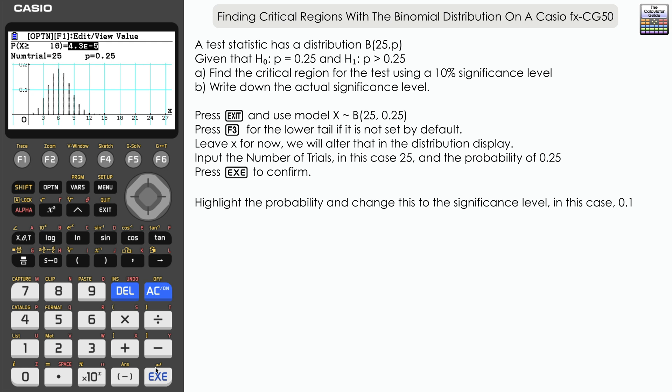So the significance level that we want is 0.1. Now the orientation of the inequality will mean we can put in the significance level directly. We don't need to put in 0.9; we can put in 0.1. It's focused on greater than or equal to values. Press execute, and once again...